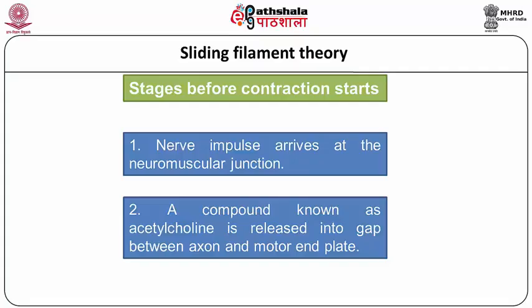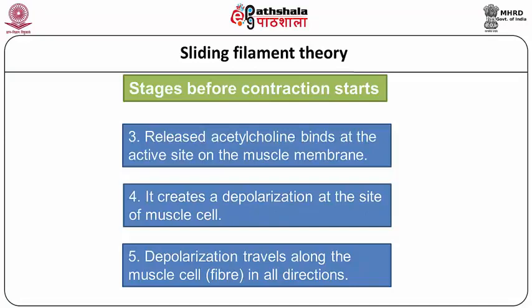The sliding filament theory explains the contraction process. However, before contraction happens the electrical impulse has to come to the muscle. There are five stages before the contraction of a muscle actually starts. In the first phase, a nerve impulse arrives at the neuromuscular junction. The moment it arrives, a compound known as acetylcholine is released into the gap between the axon and the motor end plate. This acetylcholine binds at the active site of the muscle membrane, causing depolarization at that site of the muscle cell. This depolarization travels throughout the muscle fiber, causing the muscle contraction.